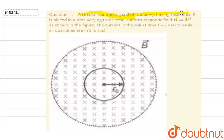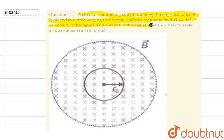Hello everyone. A circular conducting coil of radius r₀ having resistance R is placed in a time-varying transverse uniform magnetic field B = 4t², as shown in the figure. We need to find the current in the coil at t = 2 seconds.